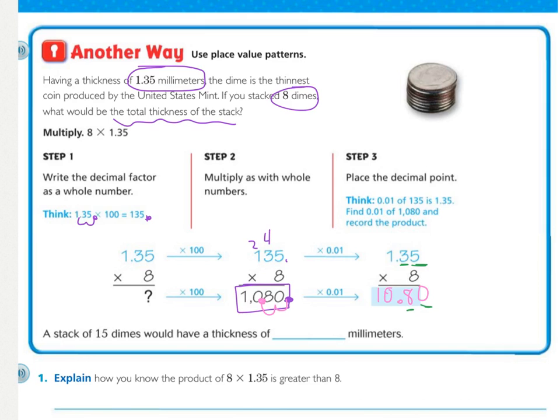Now, noticing that there's two in our problem and two in our answer, there's a shortcut that a lot of people do when multiplying a decimal times a whole number. And this strategy is the reason why that shortcut works because we multiplied times a hundred to move the decimal and then we undid what we did to place the decimal back. But that's the reason why counting decimal places and making sure you have that many in your answer, that's why that shortcut works. But to actually answer our question, a stack of 15 dimes would have the thickness of 10 and 80 hundredths millimeters.